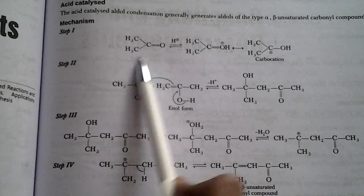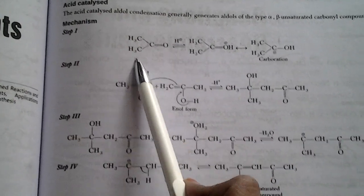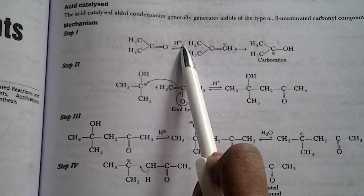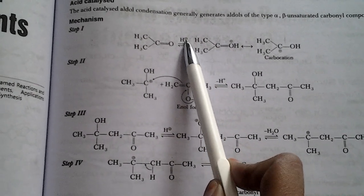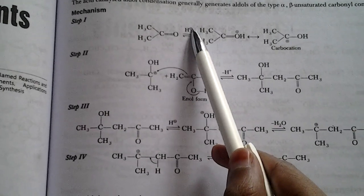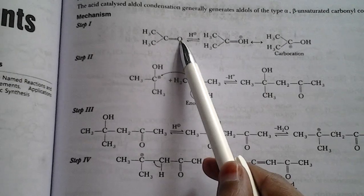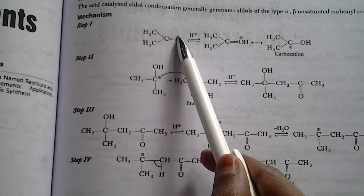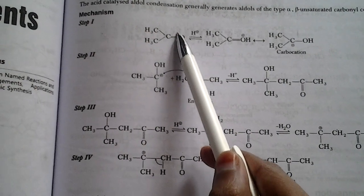In step 1, we take a ketone, namely acetone, which will be acidically catalyzed, meaning we are taking proton H+ acid. This bond will be taken—I mean, this cation form will be taken by oxygen, and the bond will be